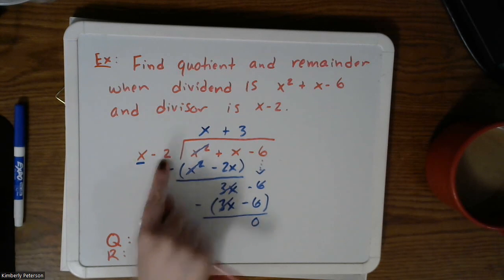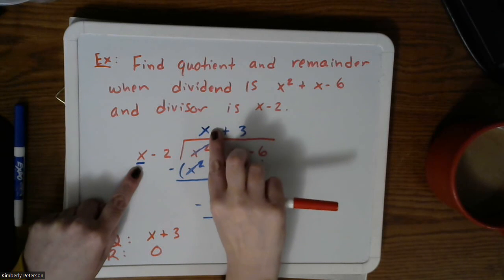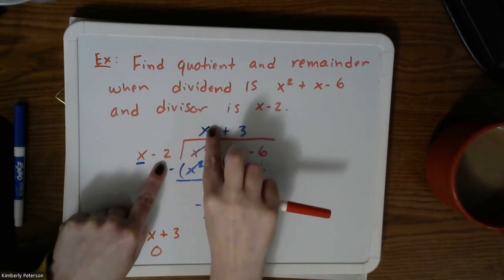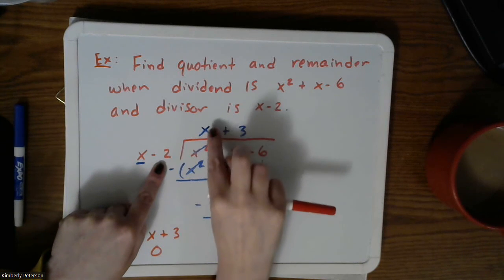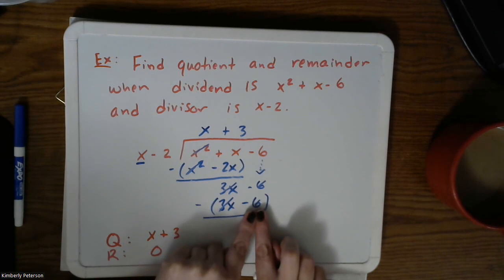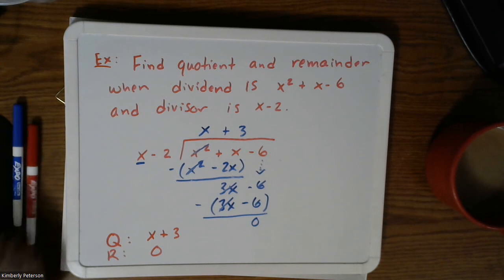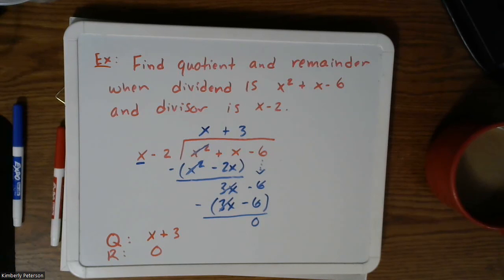The negative 2 only comes into play when you do the distribution. In the first step, x times x gives x squared. The negative 2 only appears during distribution: negative 2 times x gave the negative 2x, and negative 2 times 3 gave the negative 6. I'll stop there — I do have several more examples but we're just about out of time. Thank you for your patience. I'll be posting more homework and will continue to Zoom on Monday. Keep checking your notifications and email, and I'll post this recording as soon as I can get it converted.